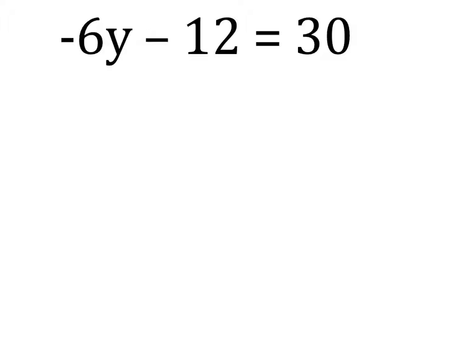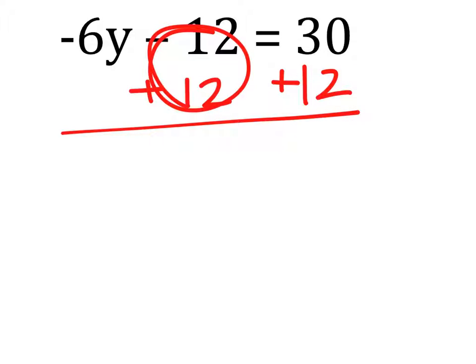What's the first thing we would do on this one? Excellent. Add 12 to both sides. That's going to be a zero now, it cancels out. 30 plus 12 is 42.